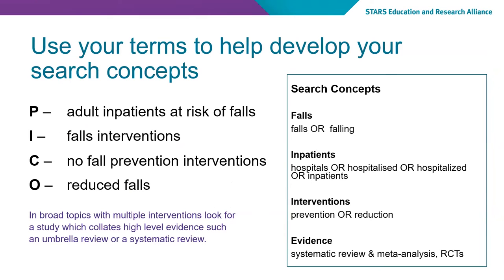From here, we will look at the PICO and see how it can help us put together our search topics. The PICO itself provides a series of concepts for the search, and it also helps us identify the evidence we might use. Here we can see the search concepts — we use various synonyms for falls, for inpatients, and the interventions are broadly stated. Most importantly, we might want to think about the evidence. This topic is very broad and may have multiple interventions, so it would be useful to look for studies that would be able to answer this question.